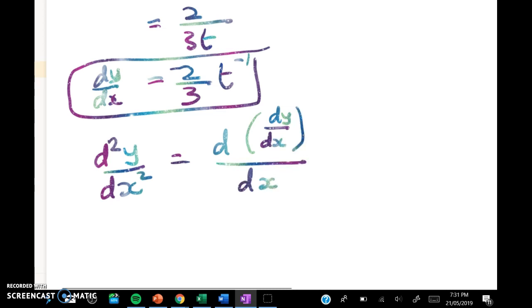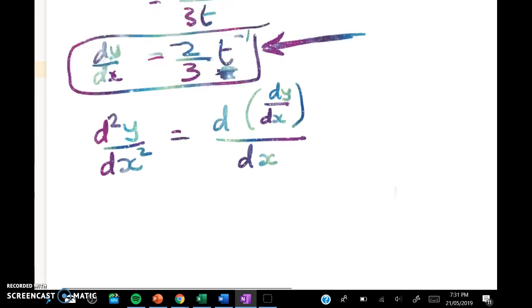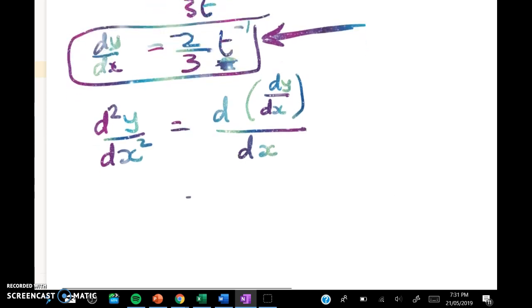Now that would be fine except that we have dy/dx and it doesn't have any x's in it. Sometimes you can do some substitution but here that's going to be really painful. So we're stuck with t. The only thing we can easily differentiate with respect to is t. So we can make the chain rule work again as follows.